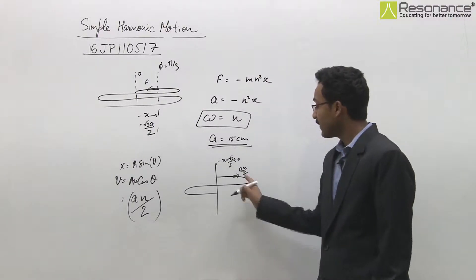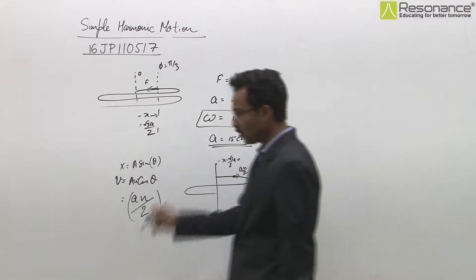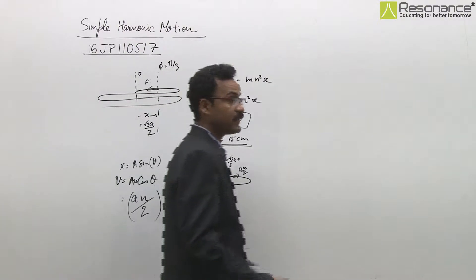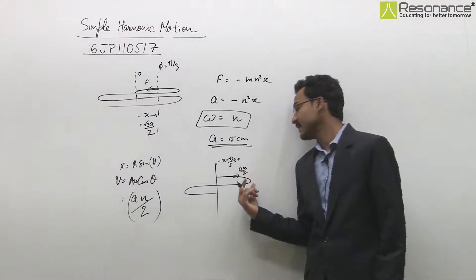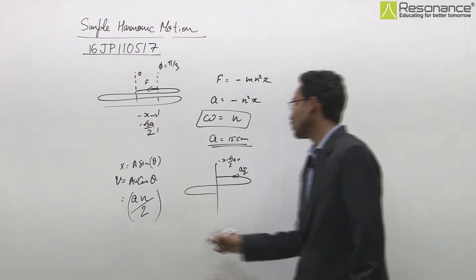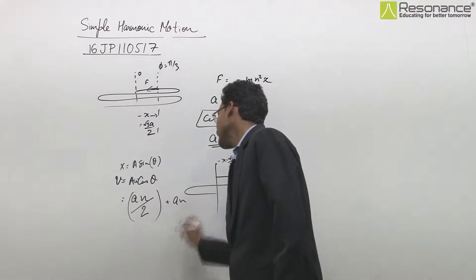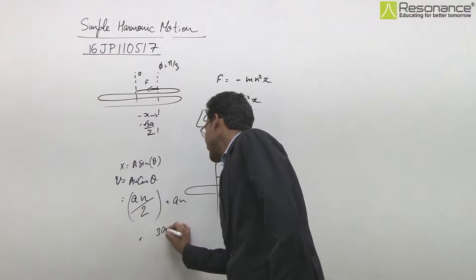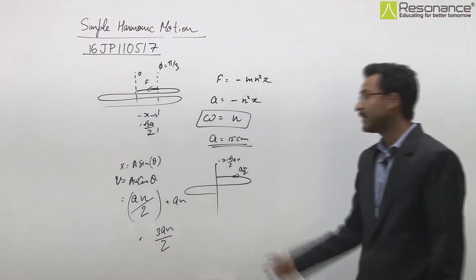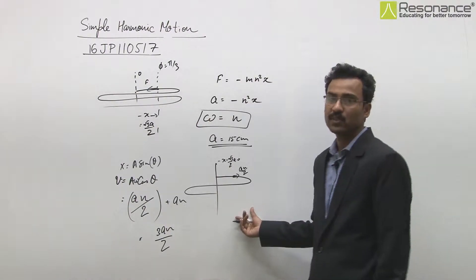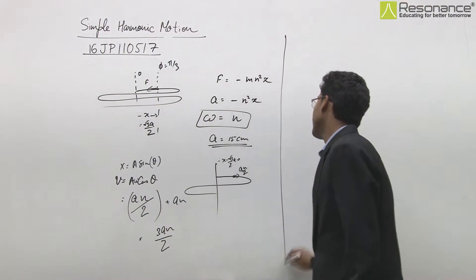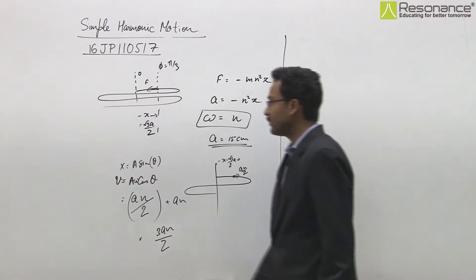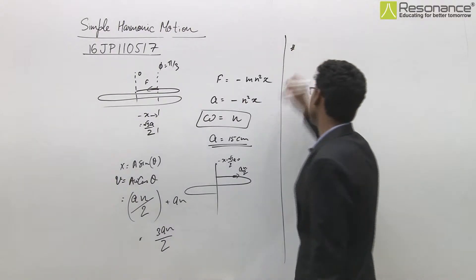At the same instant, the particle is hit by a blow which increases its velocity by an. If velocity increases by an, then an/2 plus an, its velocity becomes 3an/2. But even after increasing velocity, there is no change in frequency, and frequency remains same but amplitude will change. How much will the new amplitude be, we need to find out.